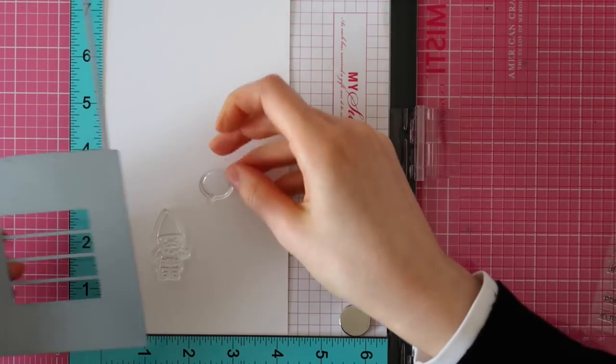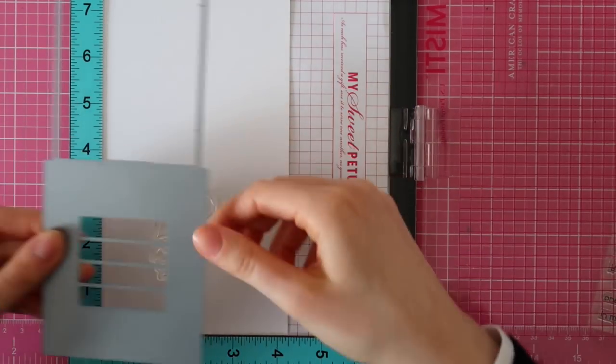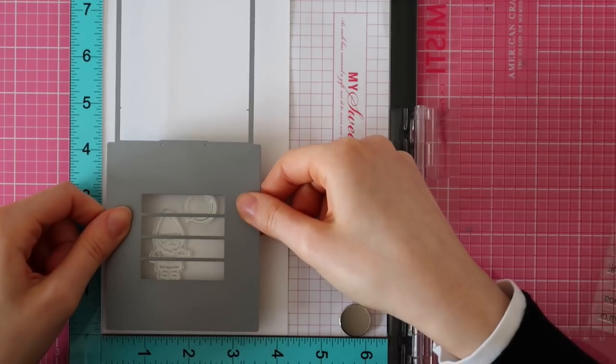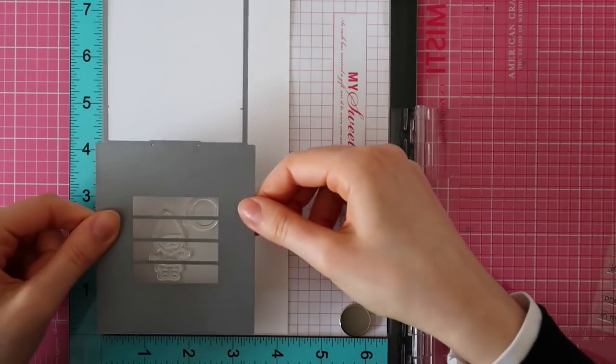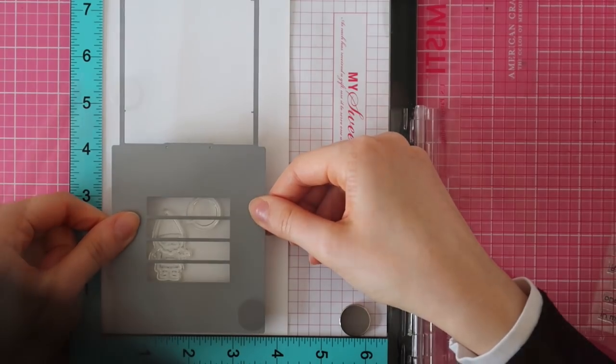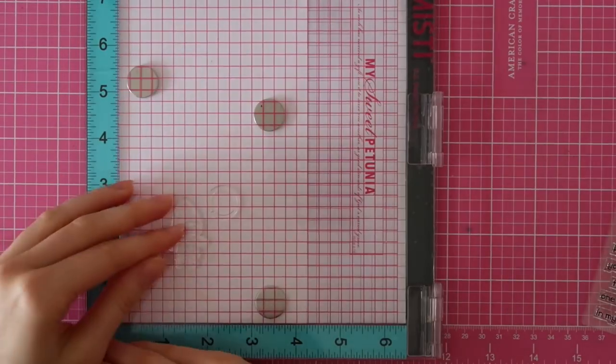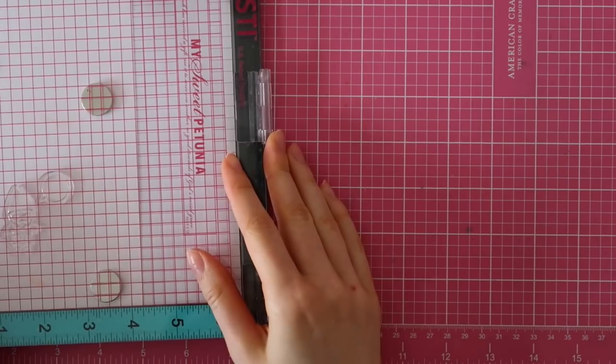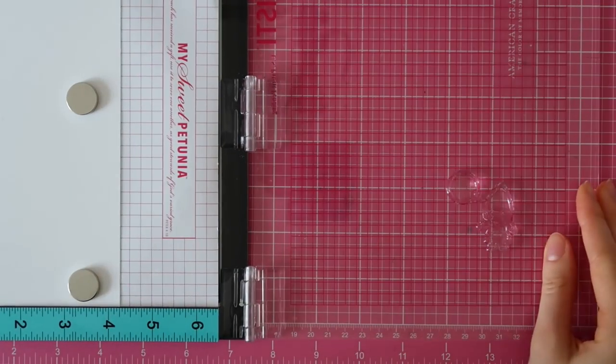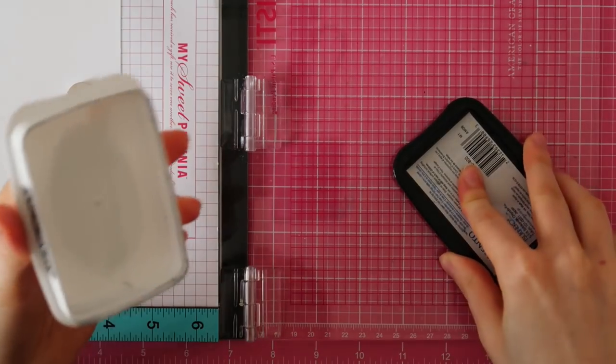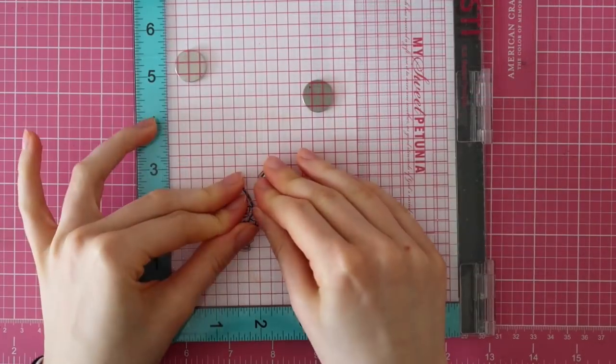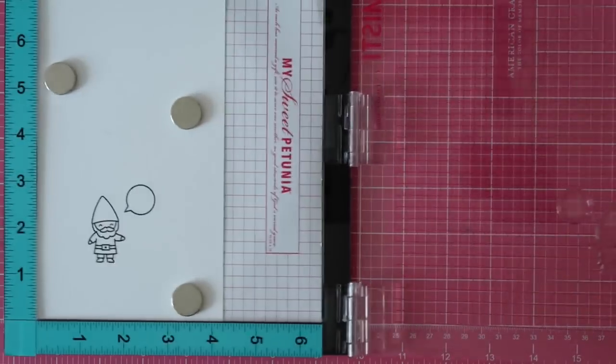For this Magic Picture Changer card, I am going to be doing a lot of masking, stamping, coloring and die cutting. I'm starting out with this adorable Gnome stamp and this speech bubble from the Oh Gnome stamp set from Lawn Fawn. I positioned that and used my die cut to create this Magic Picture Changer to position my stamps perfectly.